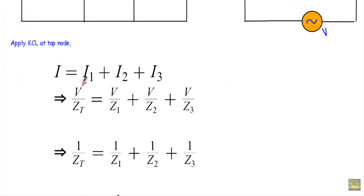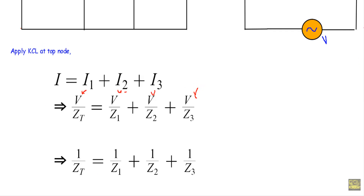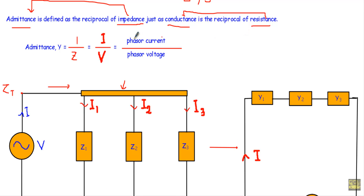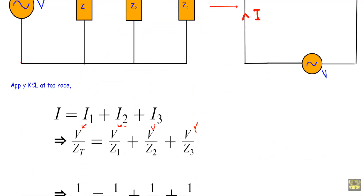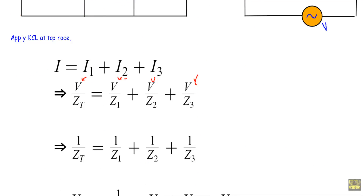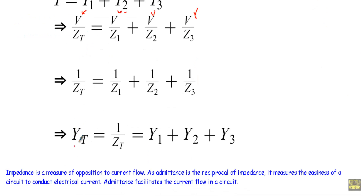Since V is common on both sides, we can eliminate it, giving us 1 divided by ZT equals 1 divided by Z1 plus 1 divided by Z2 plus 1 divided by Z3. This is the reciprocal of total impedance. Since admittance is the reciprocal of impedance, we get total admittance YT equals Y1 plus Y2 plus Y3.